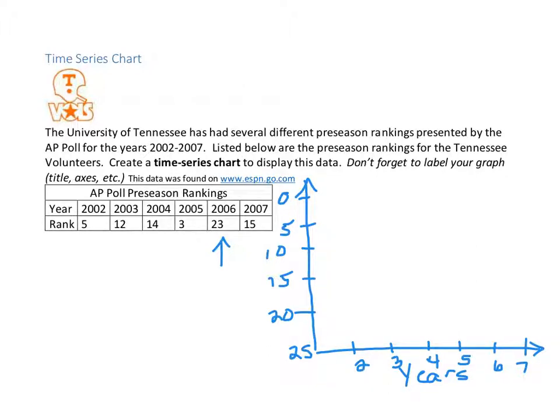So in the year 2002, their rank was 5th. So we go 2002 and up to the 5, and we make a point. And then in 2003, they were ranked 12th, and that would be between 10 and 15. So we'll say that's about here. And then in 2004, they were ranked 14th, so that would be just a little closer to 15. And then in 2005, they were ranked 3rd. And then in 2006, very next year, they were ranked 23rd. And then in 2007, they were ranked back at 15.